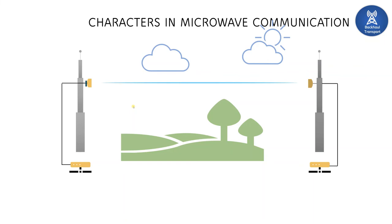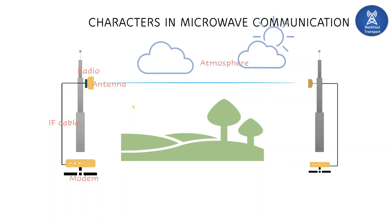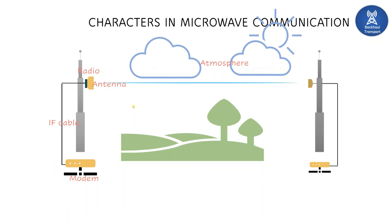What are the key components in microwave communication? The first one is the modem — it converts the baseband signals into IF frequency. Then the IF cable, which works at 455 MHz, carries the IF signals to the radio. The radio converts the IF frequency into radio frequency, and through the antenna it radiates electromagnetic waves in the atmosphere. So modem, IF cable, radio, and antenna are the main components, and also the atmosphere. Atmosphere plays a key role in microwave communications along with terrain data. Terrain also plays a crucial role — it affects and can degrade the performance of a microwave link, and it's not always predictable, which is the main disadvantage of microwave communication.